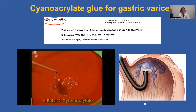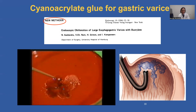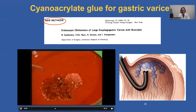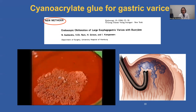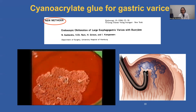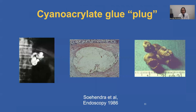Cyanoacrylate glue — the radiologists were using this long before we started to use it. It was first reported by my mentor Nibs Ahender in 1986. This is a monomer, and it polymerizes as soon as it comes in contact with an ionic medium like blood. Within seconds it polymerizes and forms a rock-hard substance that plugs up the varix lumen. Historically, we have been performing this in retroflexion, looking back at the fundus. This glue plug can be well seen on x-ray if we mix it with a contrast agent like lipiodol. On histology, it plugs up the lumen like concrete, and a cast of the varix is sometimes extruded.